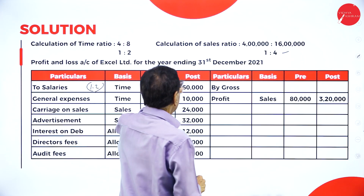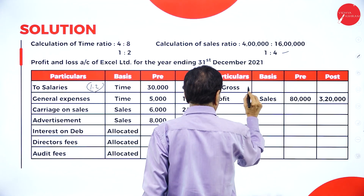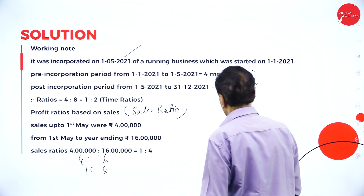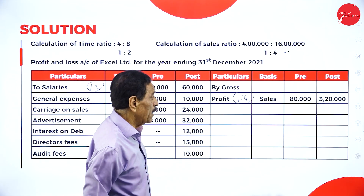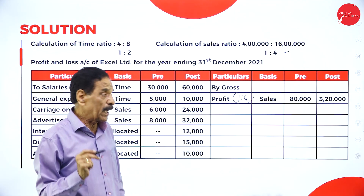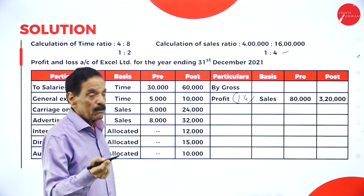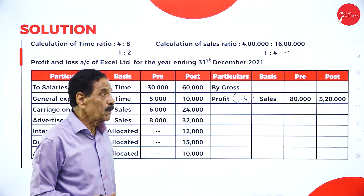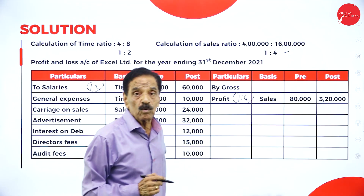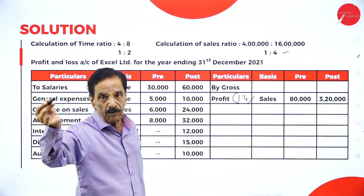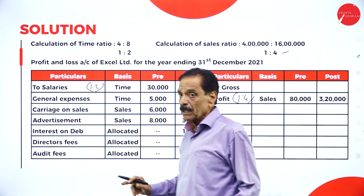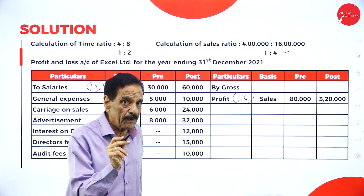Depreciation is allocated based on time ratio: 10,000 to pre-incorporation and 20,000 to post-incorporation. Gross profit is allocated based on the sales ratio of 1 to 4. Total gross profit is 4 lakh. One-fifth of 4 lakh is 80,000 goes to pre-incorporation; four-fifths of 4 lakh is 3 lakh 20,000 goes to post-incorporation. All expenses use the time ratio while gross profit uses the sales ratio.